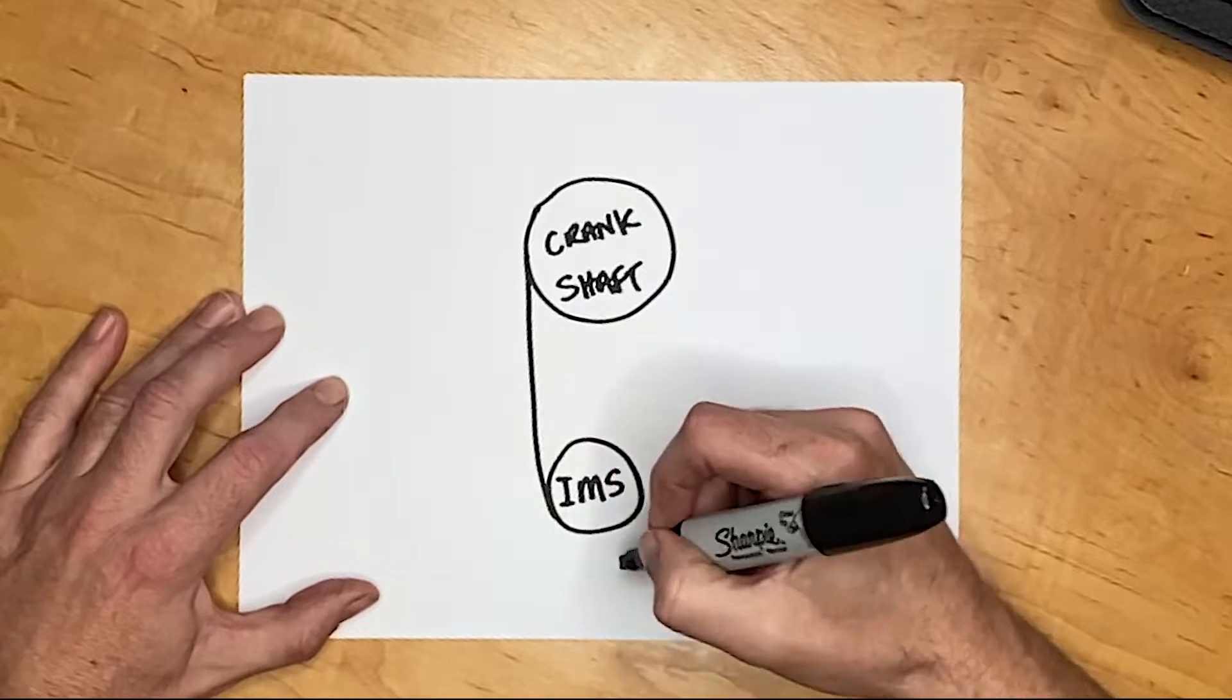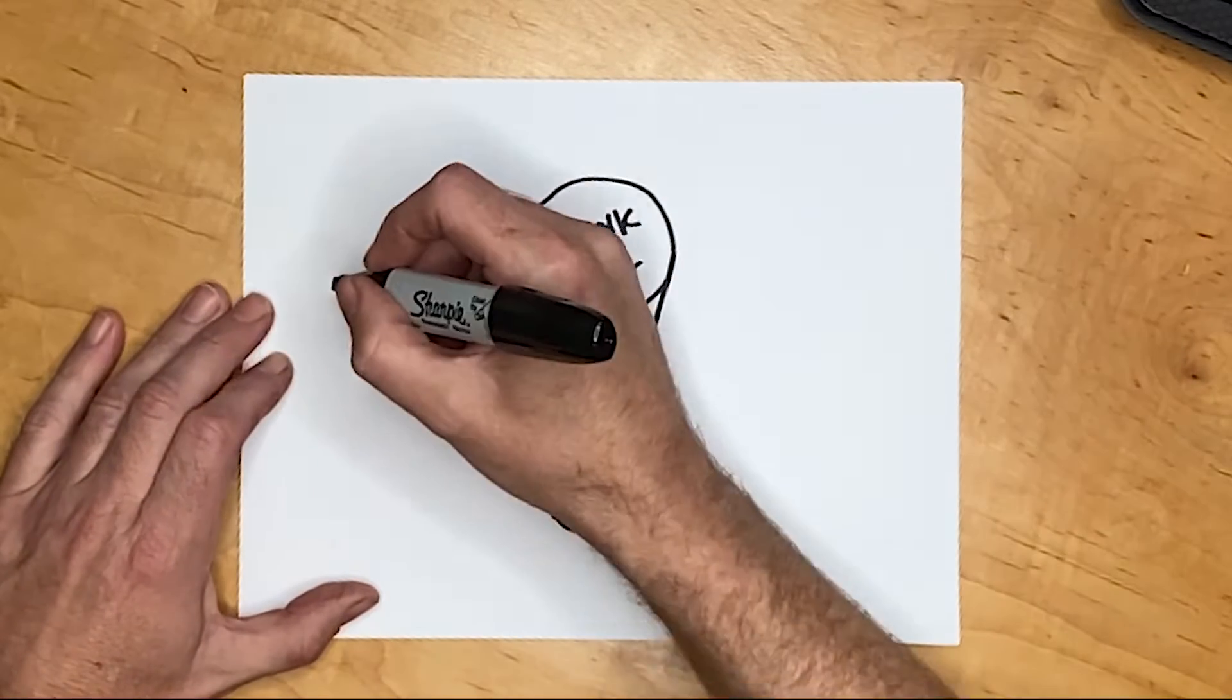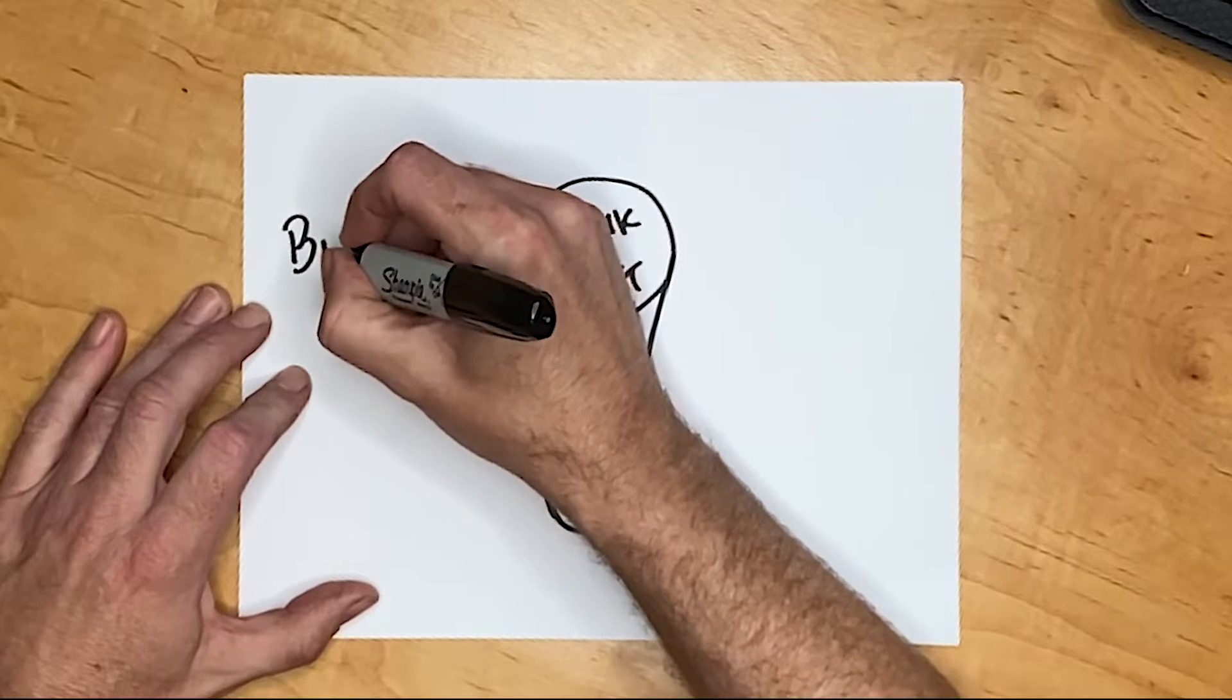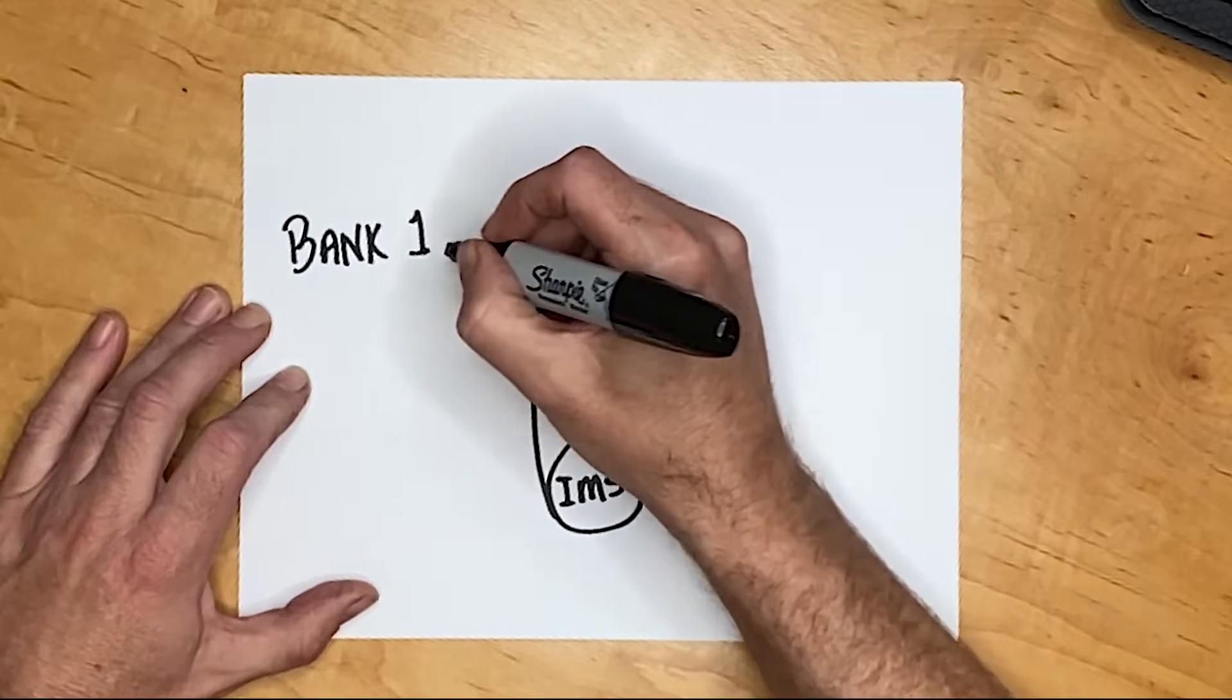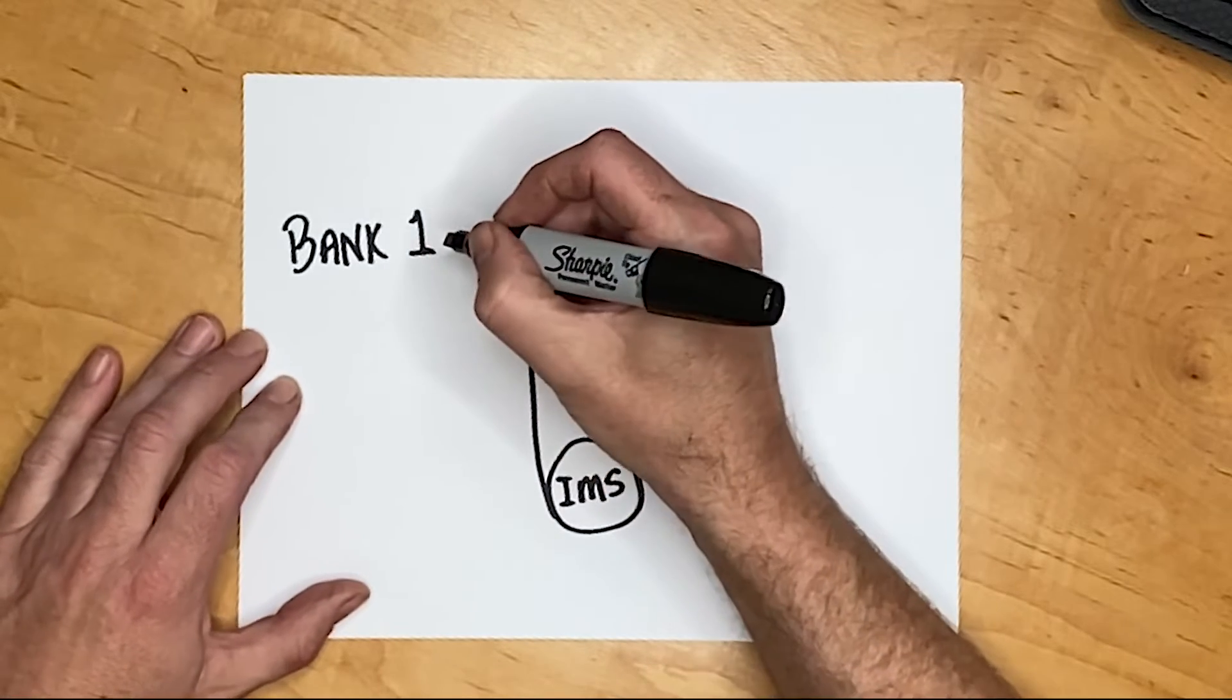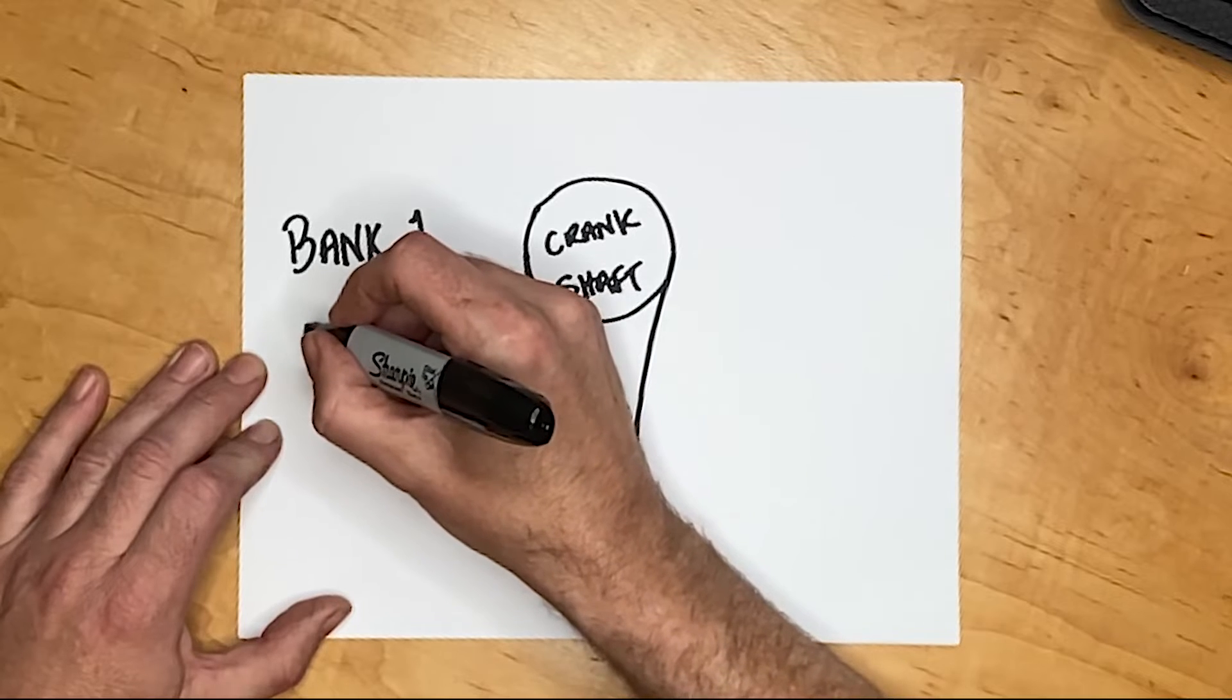It's called intermediate because it's between the crankshaft and the camshafts. So the intermediate shaft allows that chain from the crankshaft to get split in two. And one chain goes off onto bank one and one chain goes to bank two.